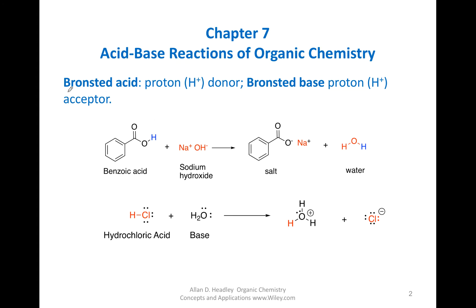First, let us define an acid and a base. We have two definitions. The first is the Bronsted definition, which I'm sure you have seen in your general chemistry course. The Bronsted acid is a proton donor — a proton is H+, hydrogen without its electrons. A Bronsted base is a proton acceptor. Our job as chemists is to apply that definition to reactions.